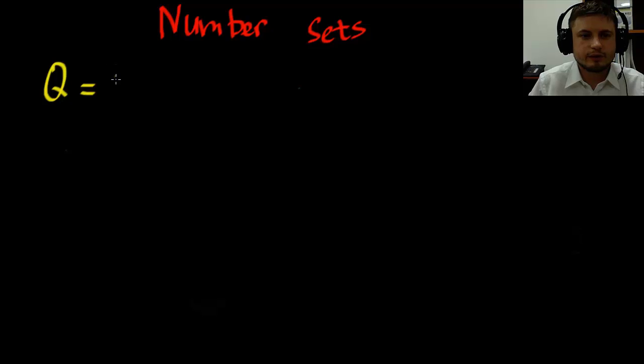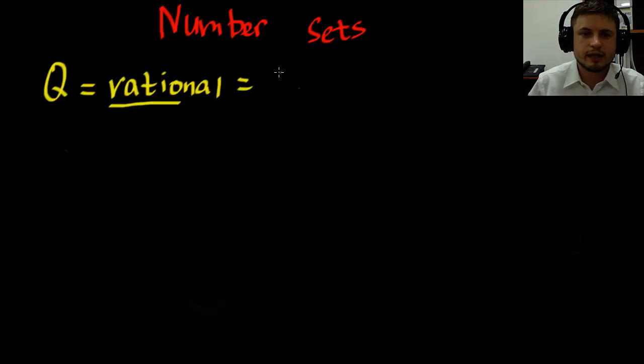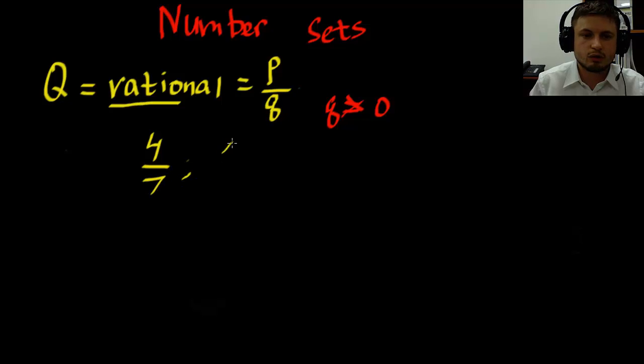The next number set is Q or rational numbers. And the key point here is this ratio. And that's essentially a ratio of two integers. Usually they're portrayed as P and Q, P over Q. Where Q, this is really important, Q cannot be 0 because you cannot divide by 0. So P over Q with P and Q both being integers. And essentially it's things like 4 over 7 or 9 over 1. So that would be rational numbers.